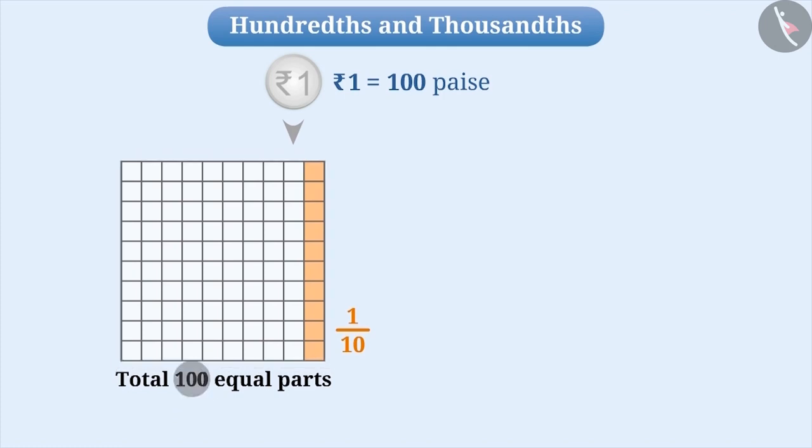Now, we can say that 1 whole square is equal to 100 parts. That means, 1 rupee is equal to 100 paise.